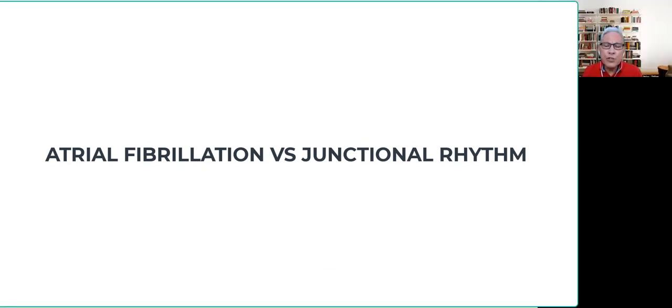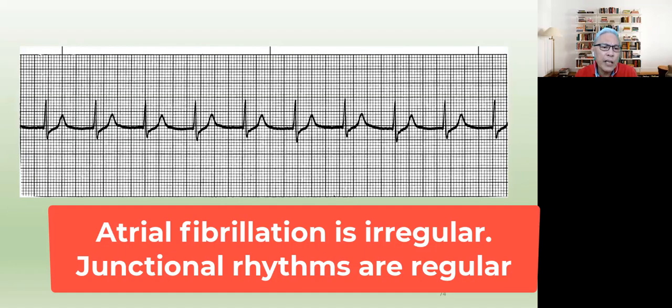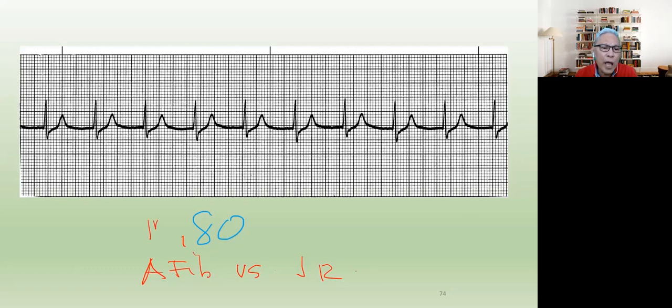What is the difference between AFib and junctional rhythm? AFib versus junctional rhythm. AFib is irregularly irregular, and this one is regular.